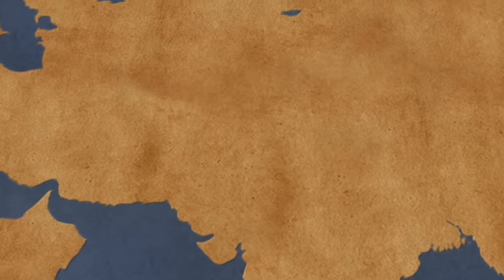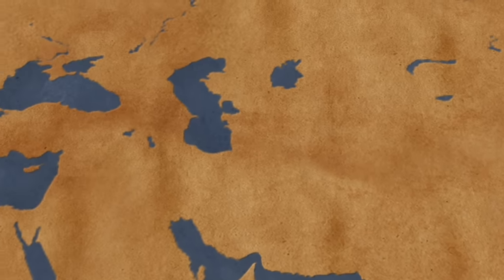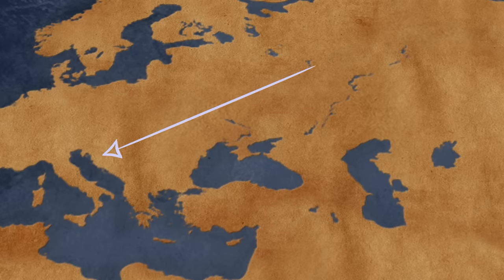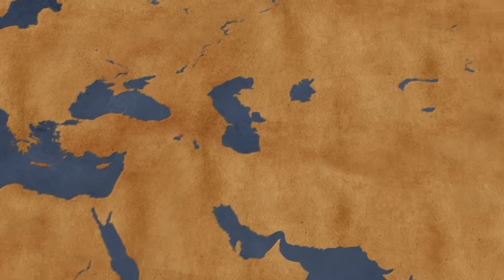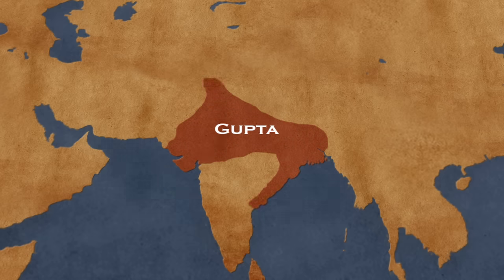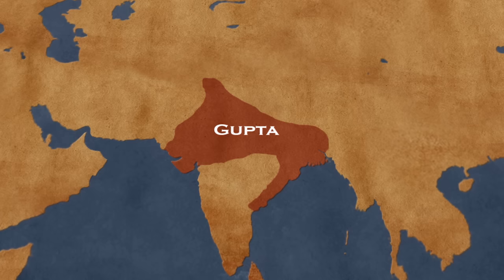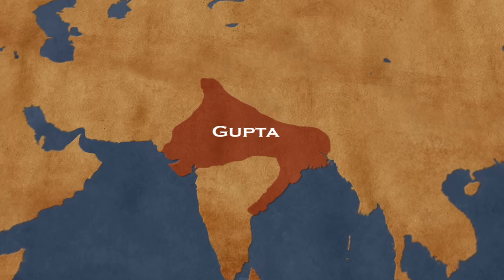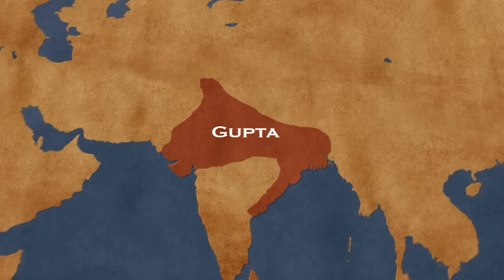While in Europe large migrations happened, with more and more people entering deep into the Western and Roman Empire, further to the east in India a new powerful state was born. It comprised most of the north of India over the Ganges. For more than 200 years, this empire was led by emperors from the Gupta dynasty, and through history it will be known as the Gupta Empire.